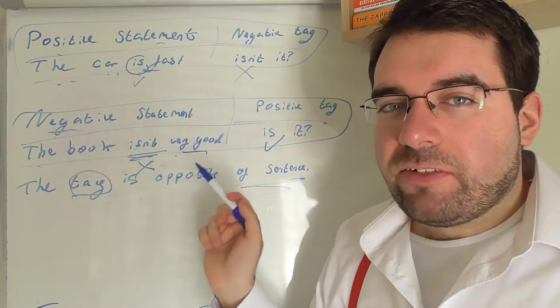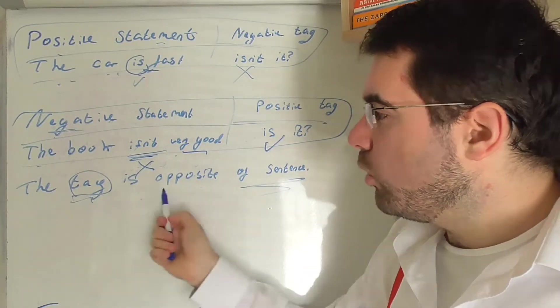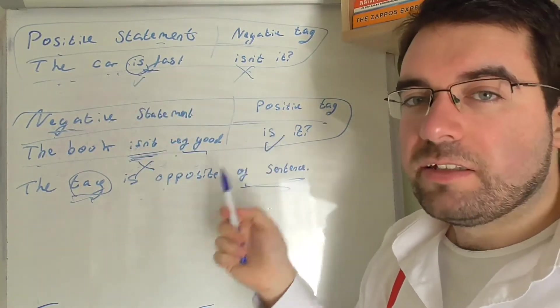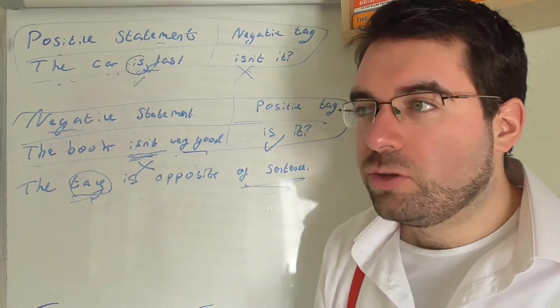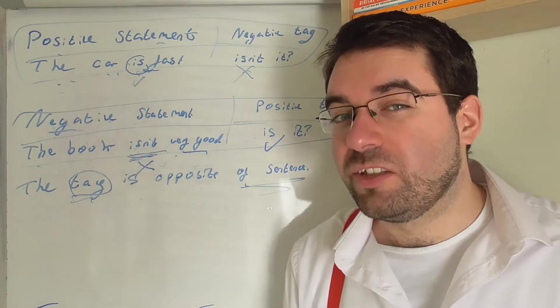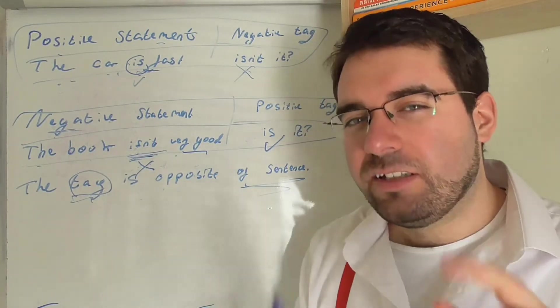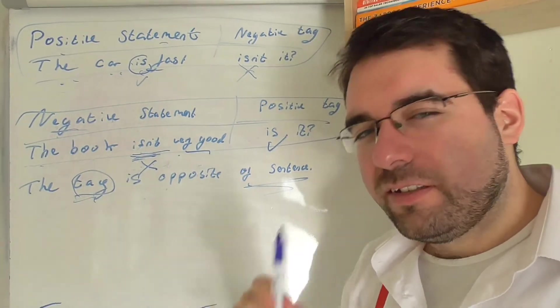So here's an interesting little caveat. The tag is always opposite of the sentence, always opposite of the verb. Isn't, is, are, aren't, do, don't. Well, let's look at do and don't auxiliary verbs next. Let's keep going. There's always more to learn.